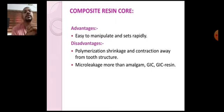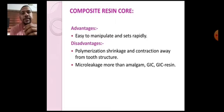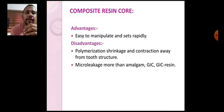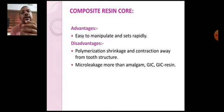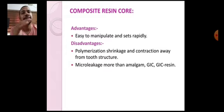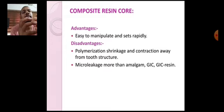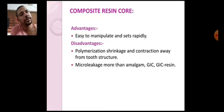Now let's talk about composite resin cores. Composite resins are the most commonly used material for restoration purpose. It is very easy to manipulate and sets very rapidly, because most composite resins are light cured — you just place it and use the light source to set the composite resin. That is the most advantageous aspect of this material. However, polymerization shrinkage or contraction of the material after polymerization is more for composite resin.